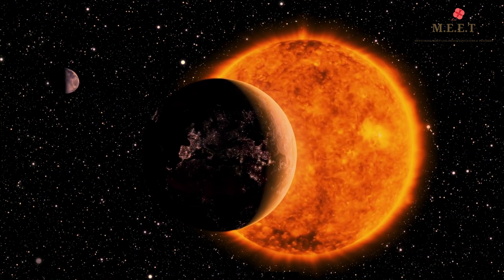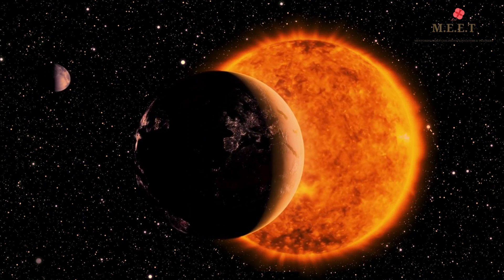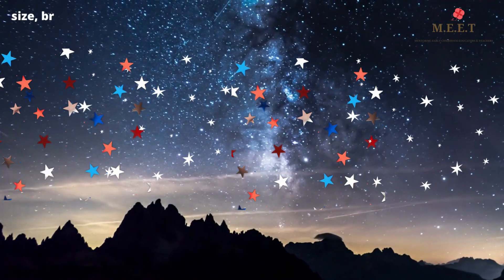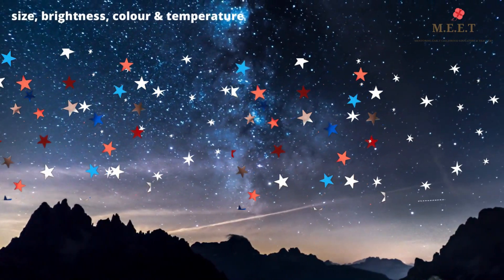Because the sun is so much closer than other stars, it looks much bigger and brighter. Stars differ in size, brightness, colour and temperature.